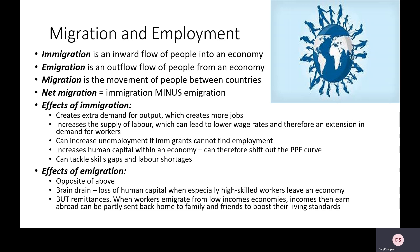Immigration is where people move into our economy — for example people from Europe moving in. Emigration is where people leave an economy — for example people moving from Britain to go live in Spain. Migration is simply where people move between countries. Net migration looks at immigration — the number of people coming in — minus emigration — the number leaving. More immigration than emigration means population is increasing; more emigration than immigration means population levels are falling.